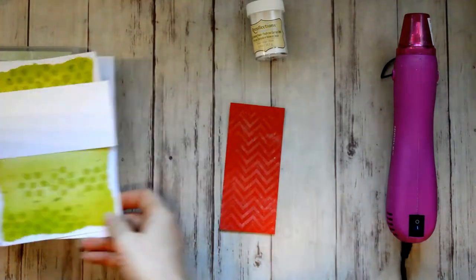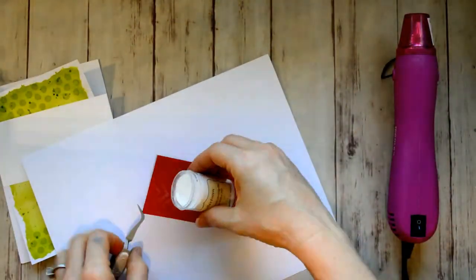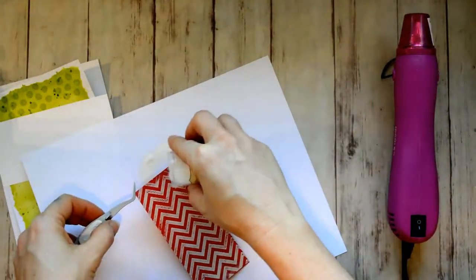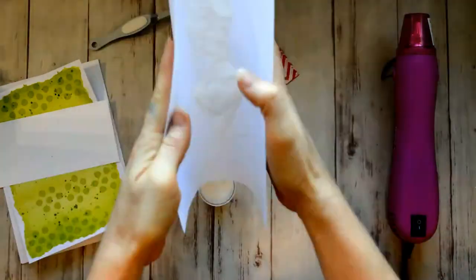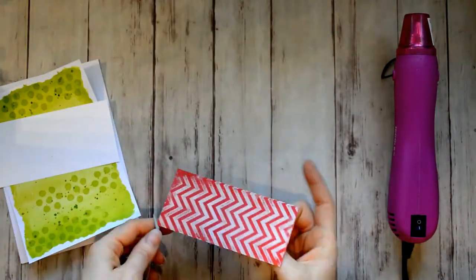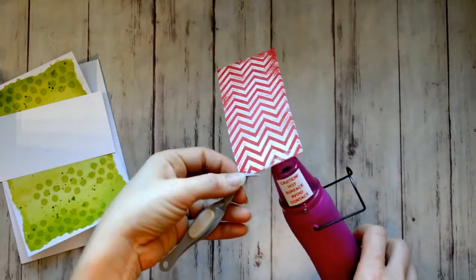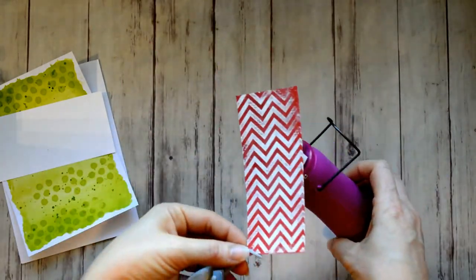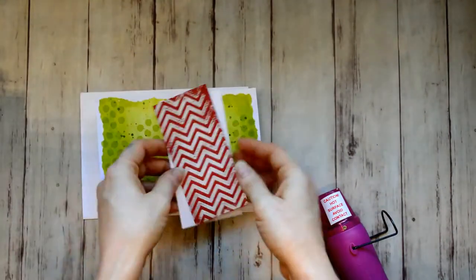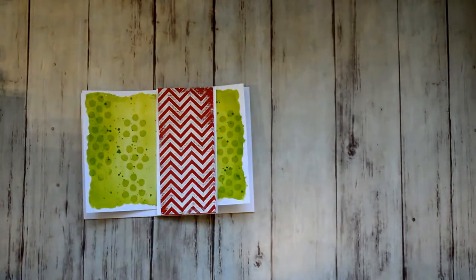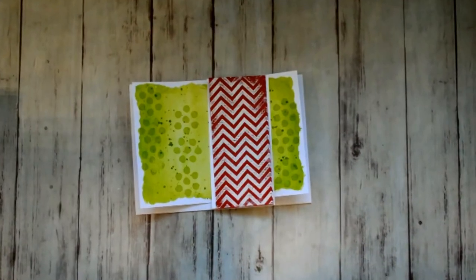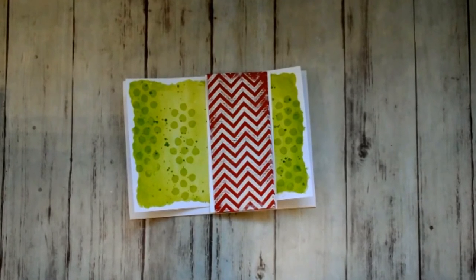And I decided to use this chevron background stamp and emboss it in white. And I'm using Recollections embossing powder in snow. And now I'm heating that up to melt the embossing powder. And the edges were kind of uneven, but I like the whole look. I think it goes with that grunge look.